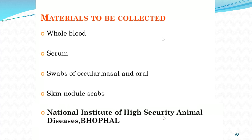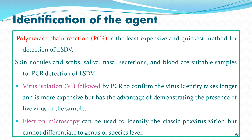Materials to be collected include whole blood, serum, swabs from ocular, nasal, and oral sites, and skin nodule scabs. Samples should be sent to the National Institute of High Security Animal Disease, Bhopal, with all documentary evidence. PCR is the least expensive and quickest method for detection of LSDV. Suitable samples for PCR include skin nodules, scabs, saliva, nasal secretions, and blood. Virus isolation followed by PCR confirms virus identity but takes longer and is more expensive, though it demonstrates presence of live virus.